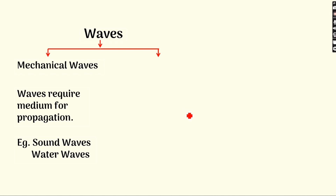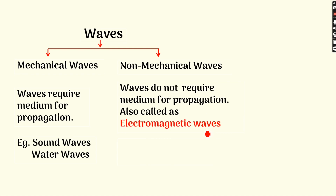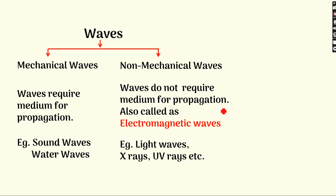There are some waves which propagate energy and do not require any material medium. These are called non-mechanical waves, and particularly they are electromagnetic waves. These waves require an imaginary field around them — the electric field and magnetic field. As they propagate energy, the electric and magnetic fields vibrate. The common examples of electromagnetic waves are light waves, X-rays, UV rays, and so on. The electric and magnetic fields vibrate mutually perpendicular to each other while the disturbance travels forward.